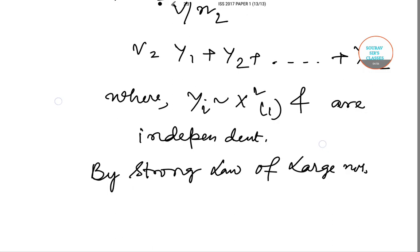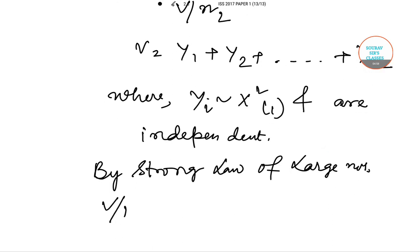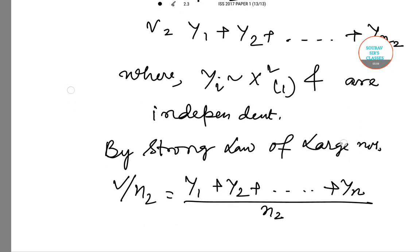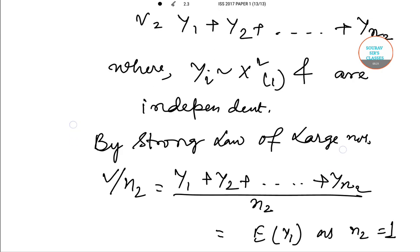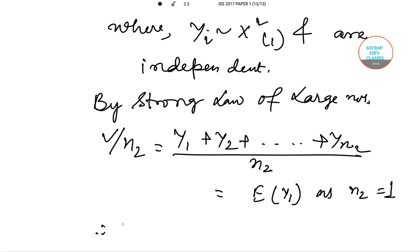we can say that V/n2 = (Y1 + Y2 + ... + Yn2)/n2 = E(Y1) as n2 → ∞, which equals 1.